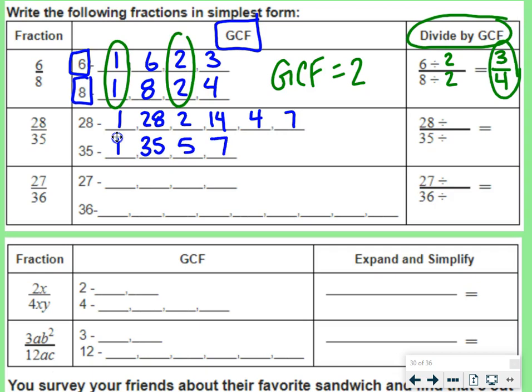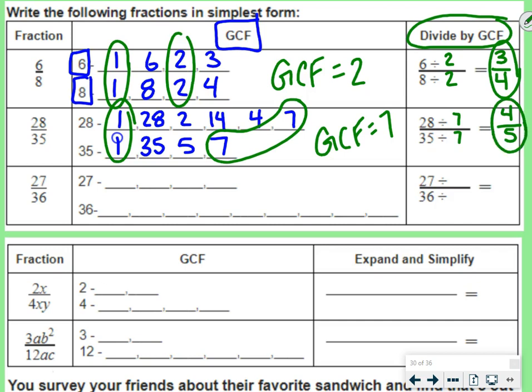And then the factors of 35 are 1 and 35 and 5 and 7. So if we look at what they have in common, they have 1 in common and they have 7 in common. So the greatest common factor would be 7. So we'll divide by 7 on the top, divide by 7 on the bottom, and we get 4 over 5. So that reduced to simplest form would be 4 fifths.